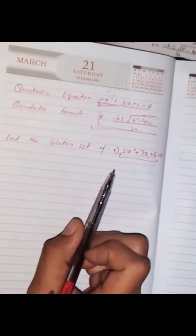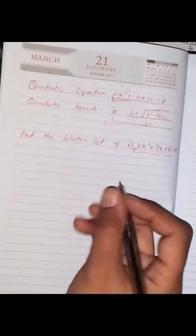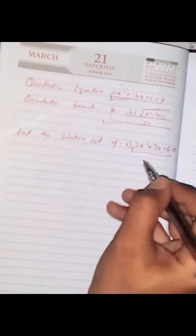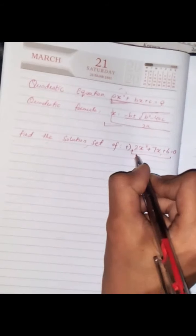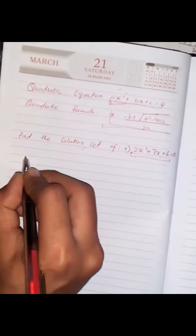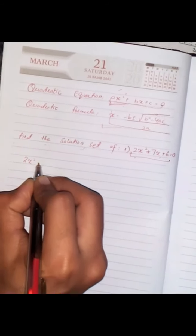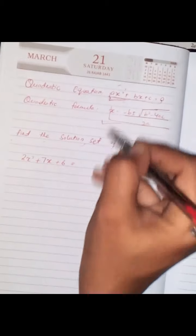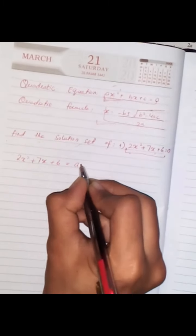By using the quadratic formula, we first have to compare this equation with the general equation of quadratic. We have 2x² + 7x + 6, and we compare it with the general quadratic equation.